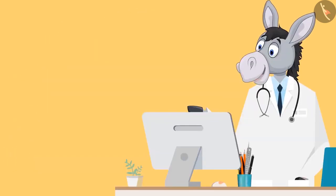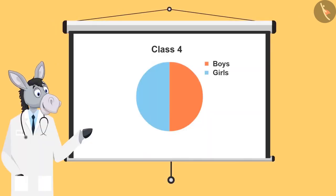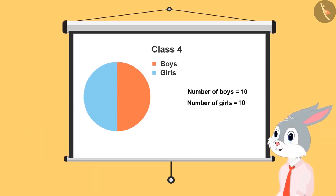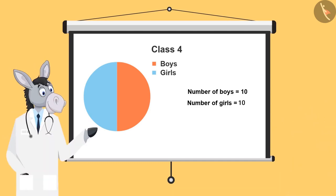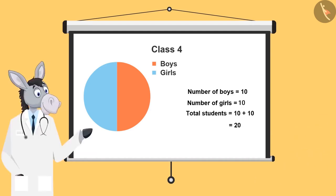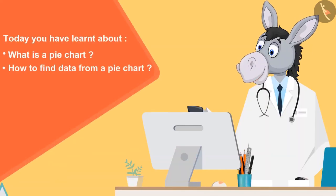Very good. Now let's look at one more example. Look at this chart — if there are half boys and half girls in a class and the number of boys is 10, then what will be the number of girls? 10. Right. So what is the total number of students in the class? 10 and 10, it's 20. Very good. So kids, today you have learnt about what is a pie chart and how to find data from a pie chart.